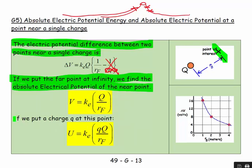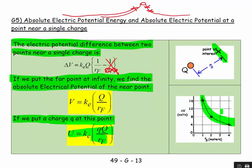If we want the absolute potential energy, we simply multiply V by the little q we place at that point. Notice that these quantities fall off as an inverse relationship, as opposed to the electric field or force which fall off as an inverse square relationship — so there's a difference in the symmetries there.